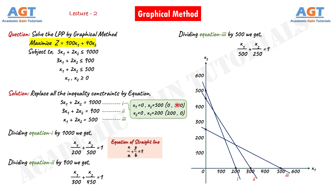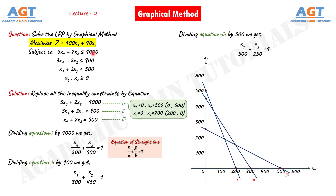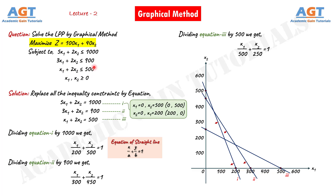Now we will look for inequalities. If we look at the conditions given in the question, according to the first condition, the first line will be less than or equal to 1000, so in line number one we will place arrows towards the origin because there is a less than or equal to sign. Similarly, according to the second condition, the second line will be less than or equal to 900, so in line number two we will place arrows towards the origin. According to the third condition, the third line will be less than or equal to 500, so in line number three we will also place arrows towards the origin.